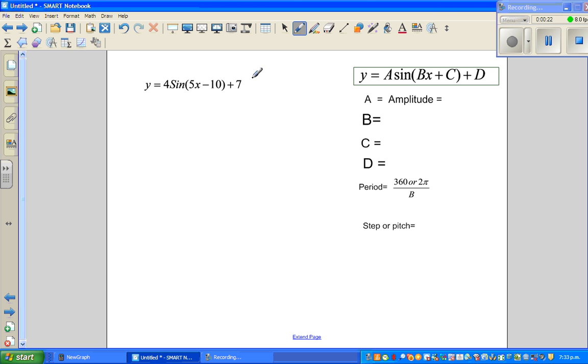A is the amplitude. A is the coefficient of x, and the coefficient of x is 4, so the amplitude of this graph is 4. B tells me the period, so B is 5. C is negative 10 and D is 7.